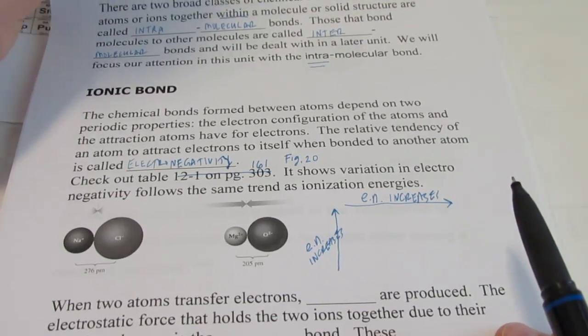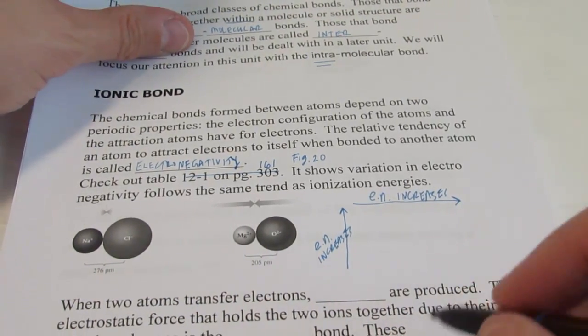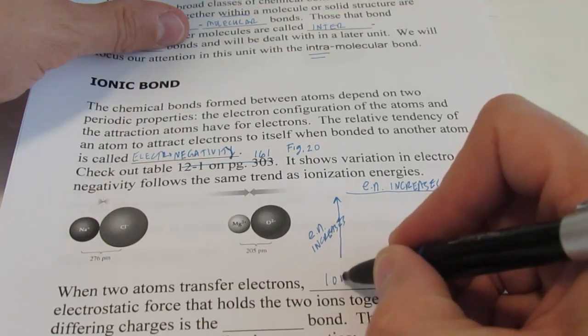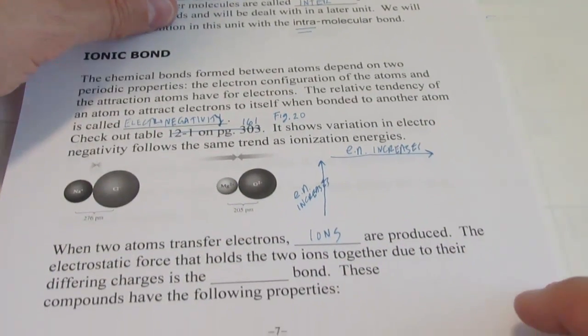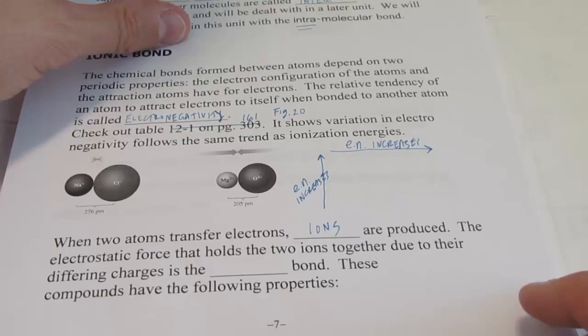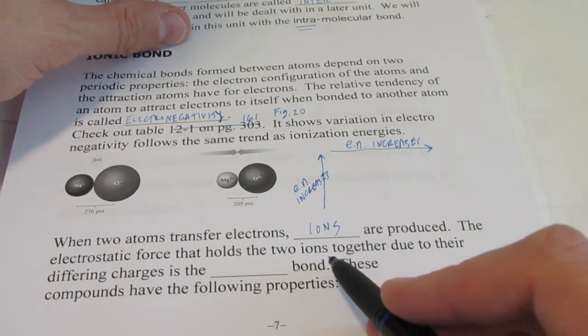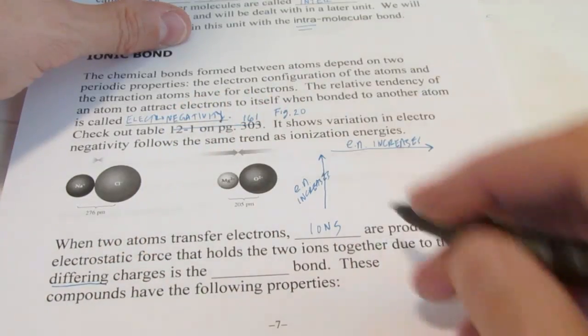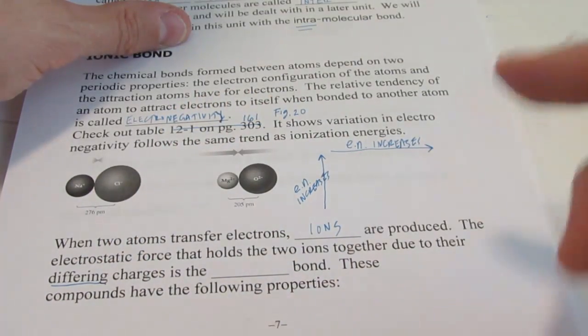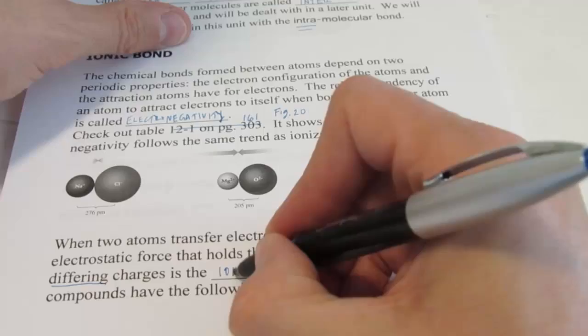When two atoms transfer electrons, we know that ions are produced. That's a vocabulary term from a lecture not too long ago. The electrostatic force that holds the two ions together due to their differing charges, one being positive, one being negative, is called the ionic bond.